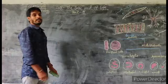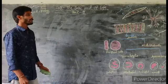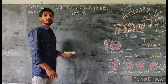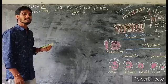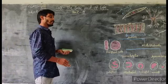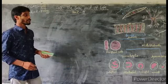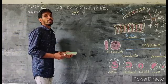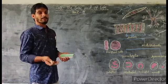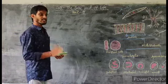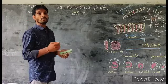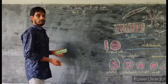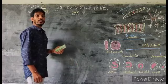Good morning, gentlemen. In last class, we were discussing about cell, the basic unit of life, part 2. In part 2, we are discussing about diversity in cells. What is meant by diversity? Different types of cells are present in our body, but not all the cells are same in shape, size, and structure. Different cells are different from one to another — that is called diversity.